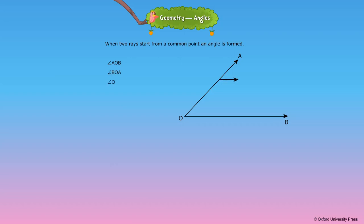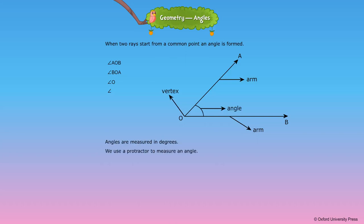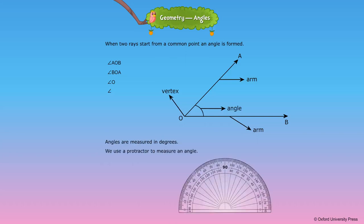OA and OB are known as the arms of the angle. O is called the vertex. The symbol used to represent the angle is shown, and angles are measured in degrees. We use a protractor to measure an angle.